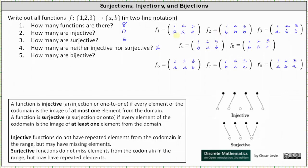Finally, for question five, how many functions are bijective? Bijective functions are both injective and surjective. Because there are zero injective functions, there is no way to have a bijective function, so the answer is zero. A bijective function requires every element of the codomain to be the image of exactly one element from the domain, which is not possible here since there are fewer elements in the codomain than in the domain.